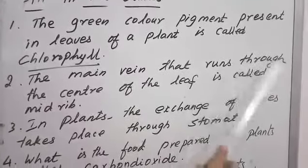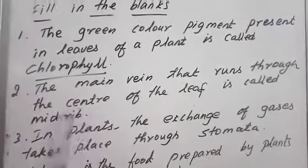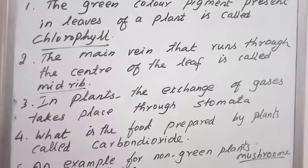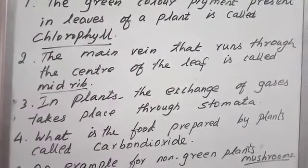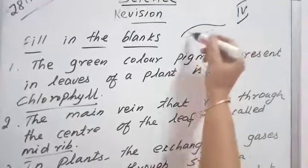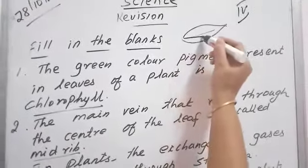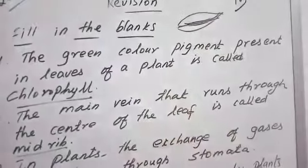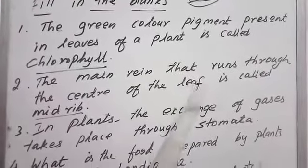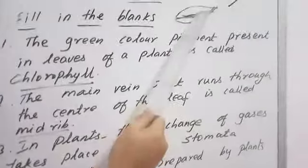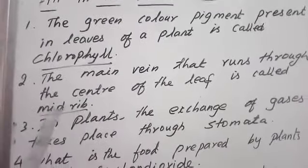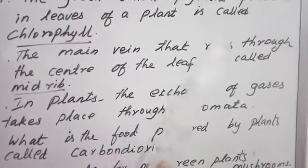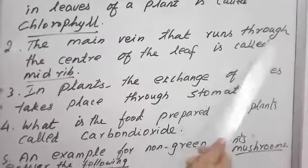The main vein that runs through the center of the leaf is called midrib. Vein means — if you take your leaf, you can see the center of the plant. This is known as vein, the center part. Runs through the center of the leaf is known as midrib: M-I-D-R-I-B, midrib. The main vein that runs through the center of the leaf is called midrib.